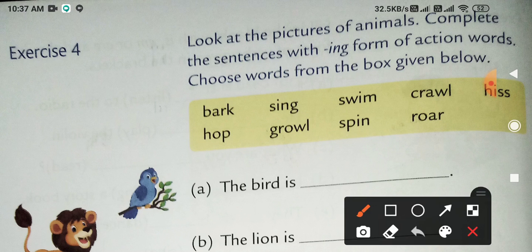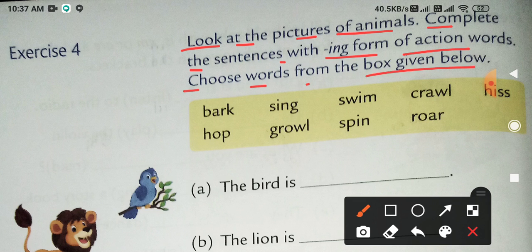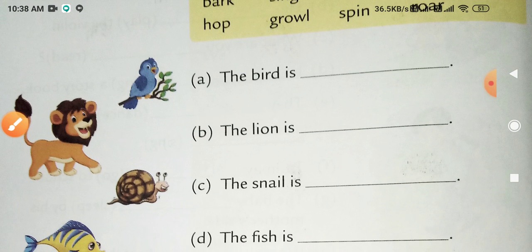Now let's start. Look at the pictures of animals. First you will look at the picture carefully, the animals' pictures, and complete the sentences with -ing form of action words. Choose words from the box given below. From the box, according to the picture you will select, you will choose the action word and use it in ing form to complete and fill it. The words are: sing, swim, crawl, hiss, hop, growl, spin, and roar.